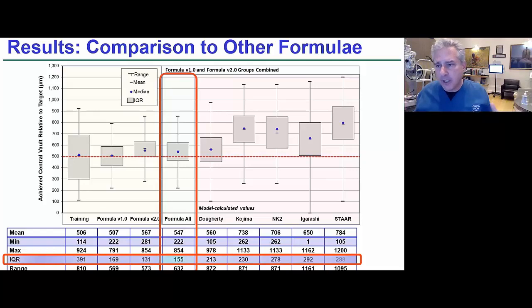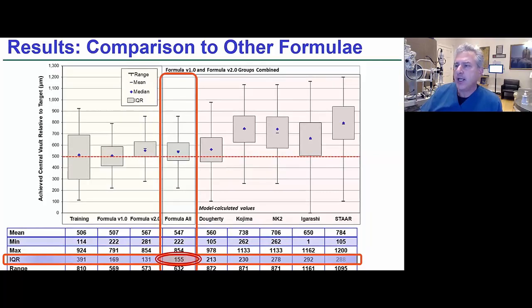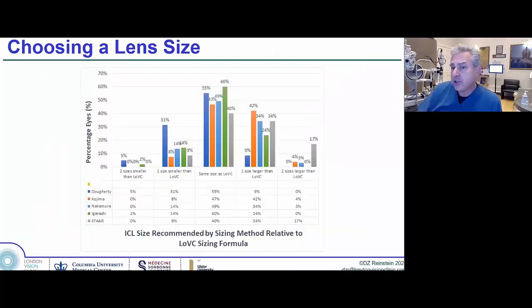It's really the outliers that we're interested in getting rid of because the exchange rate of the ICL is very low, even with white-to-white sizing. What we're trying to do is to get rid of the outliers so that we can get rid of the exchanges. That's the key here. Tightening the interquartile range, tightening the full range, is what we're looking for. We just looked at this in another way. We said, based on the size that we chose, what were the other formulas choosing?